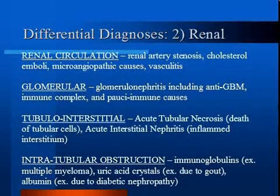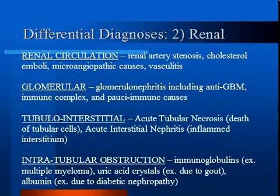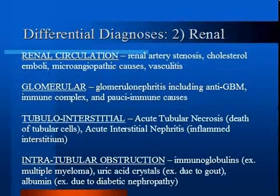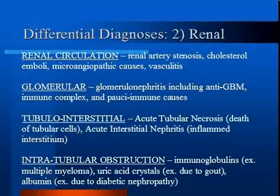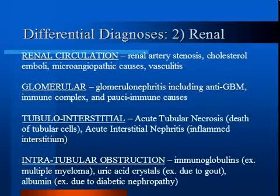In terms of renal causes, there are several causes best sorted anatomically. Diseases of the renal circulation can cause renal failure, including renal artery stenosis, cholesterol emboli, microangiopathic causes like TTP or HUS, and vasculitis like polyarteritis nodosa. Diseases of the glomerular membrane, such as glomerular nephritis, can also cause renal failure.